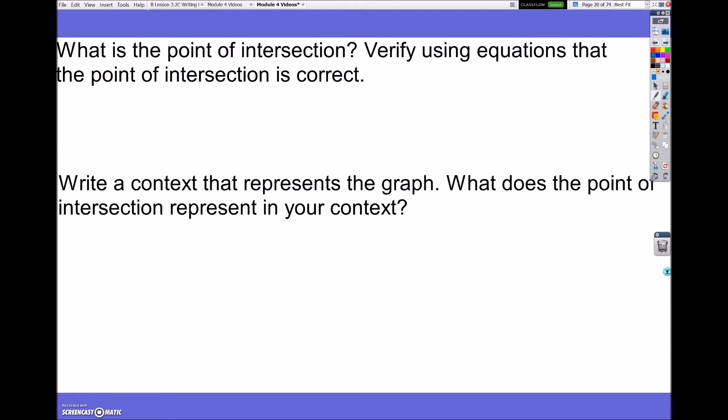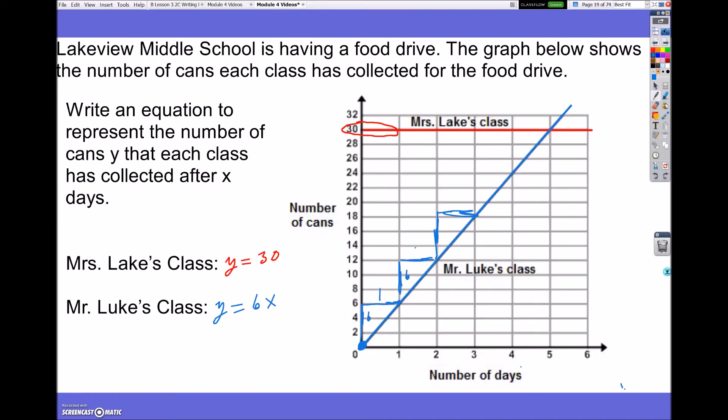So, what is the point of intersection? Verify using the equations that the point of intersection is correct. So, looking at here, the point of intersection is where the red and the blue line cross, and that would be right here. This would represent (5, 30). So, what this represents at 5 days, they both have 30 cans in each classroom.